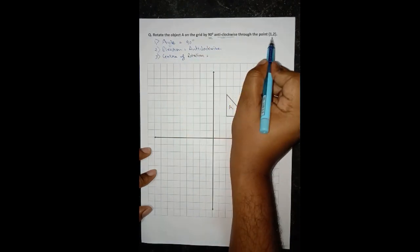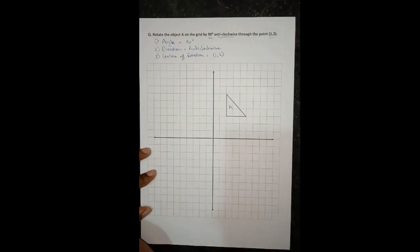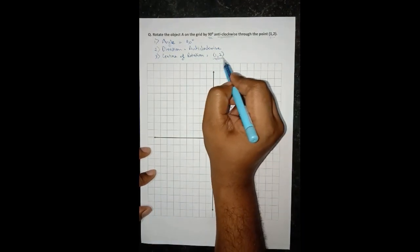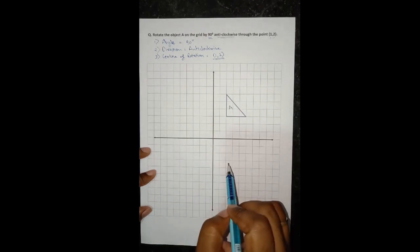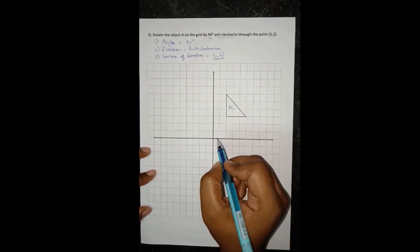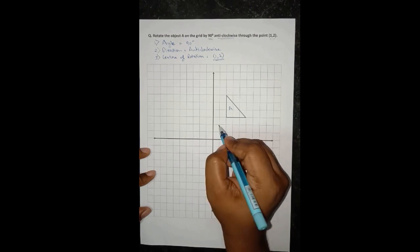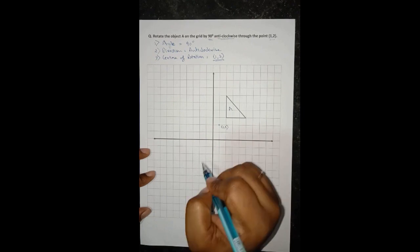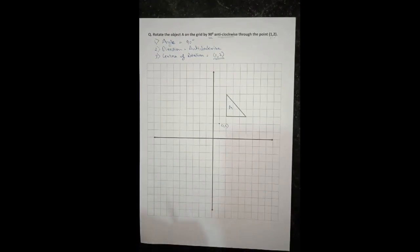And the third one is the center of rotation which is 1 comma 2 in this case. Now first of all we have to locate the center of rotation. So according to this x-y axis, the 1 comma 2 point will be here, 1 on x-axis and 2 on y-axis. So this is the required 1 comma 2 point.